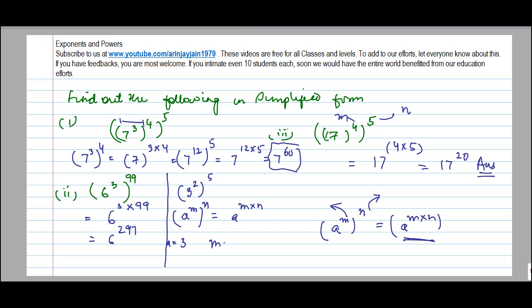What is m? m is equal to 2. And what is n? n is equal to 5. So the solution can be written as a which is 3 to the power m into n. 3 to the power m. Right?